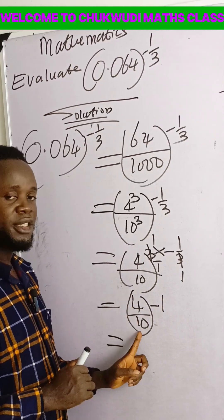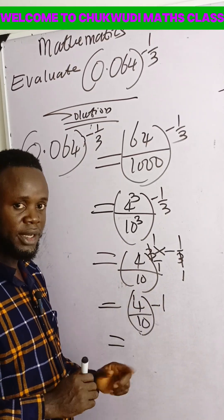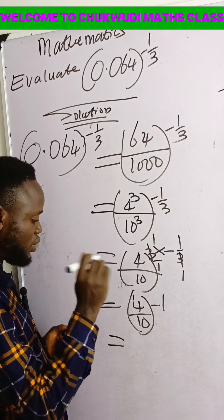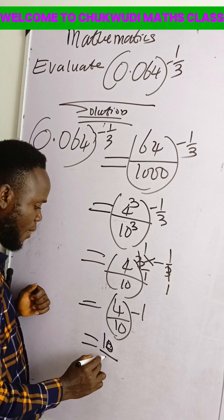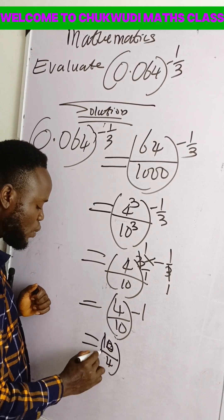Whenever you have a fraction as it is and a negative exponent, don't waste your time. What you will do is just flip the fraction. Write 10 over 4 raised to power 1.